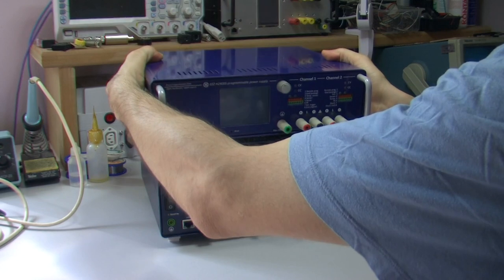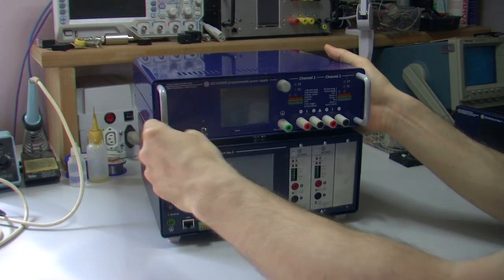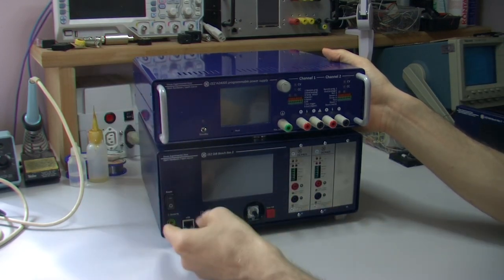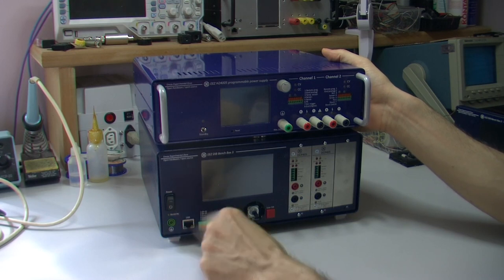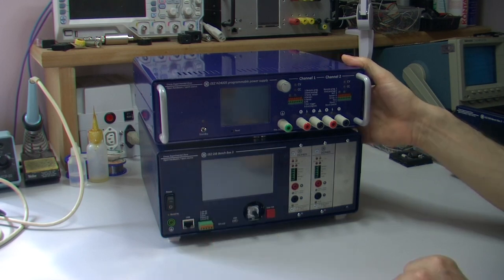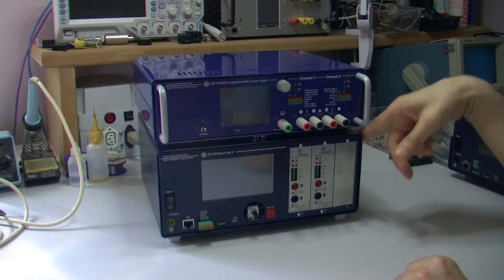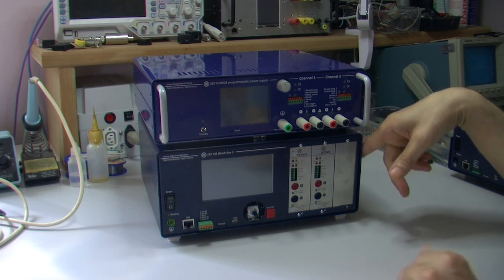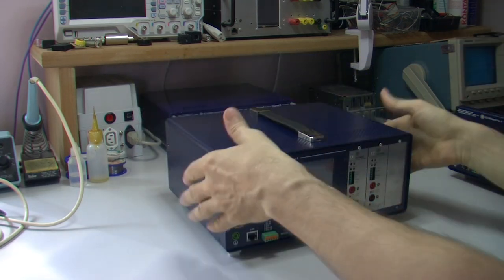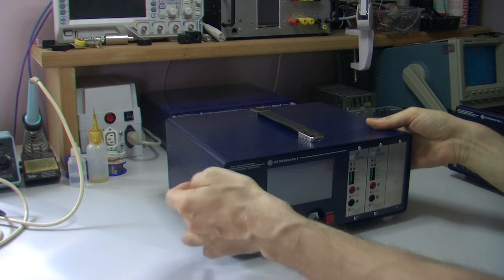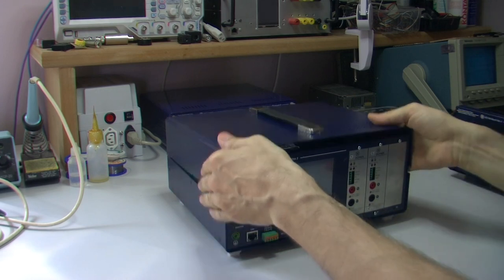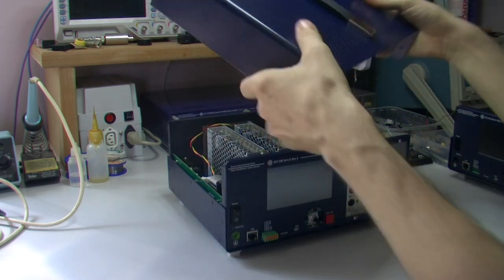So now we just moved that real power switch on the front. I will show you how Benchbox 3 looks inside. There are four screws which you need to remove. It's very simple.